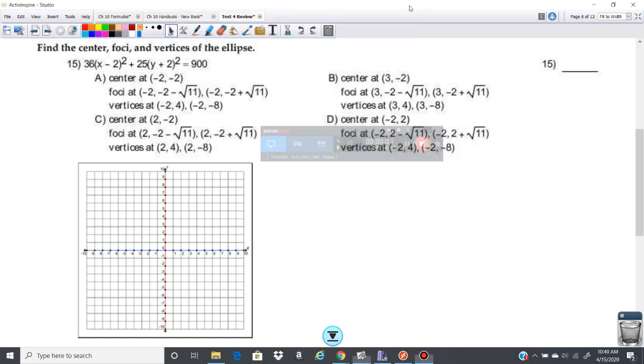This next question asks us to find the center, the foci, and the vertices of the ellipse, kind of in partially factored form, but we have to complete it here. So let me go ahead and write this equation out over here so we can start working with it.